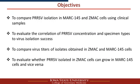My student did this study with several objectives: first, to compare PRRS VI success in MARC-145 and ZMAC cells using clinical samples; second, to evaluate the correlation of PRRS concentration (CT values) and specimen types to VI success; third, to compare virus titers obtained in these two cell lines; and fourth, to determine whether PRRS isolates obtained in ZMAC cells can grow in MARC-145 cells, and vice versa.